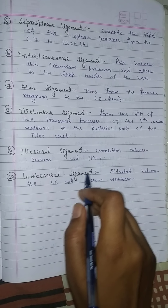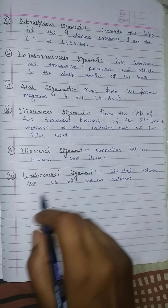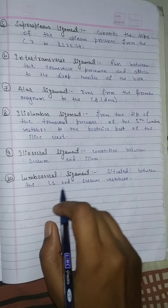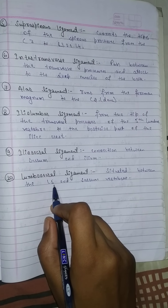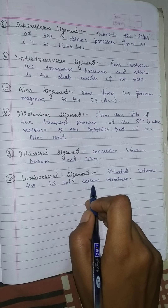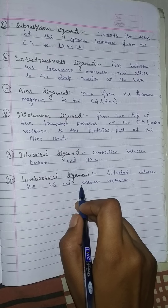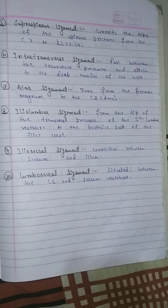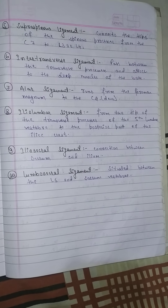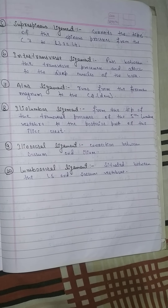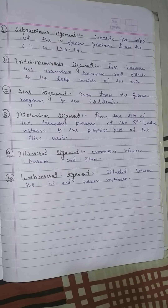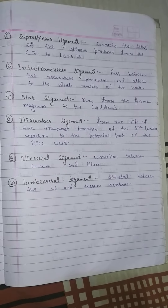The Lumbosacral Ligament is situated between L5, the last lumbar vertebra, and the sacrum. The sacral vertebrae are fused together and collectively known as the sacrum, so the lumbosacral ligament connects the last lumbar to the sacrum.